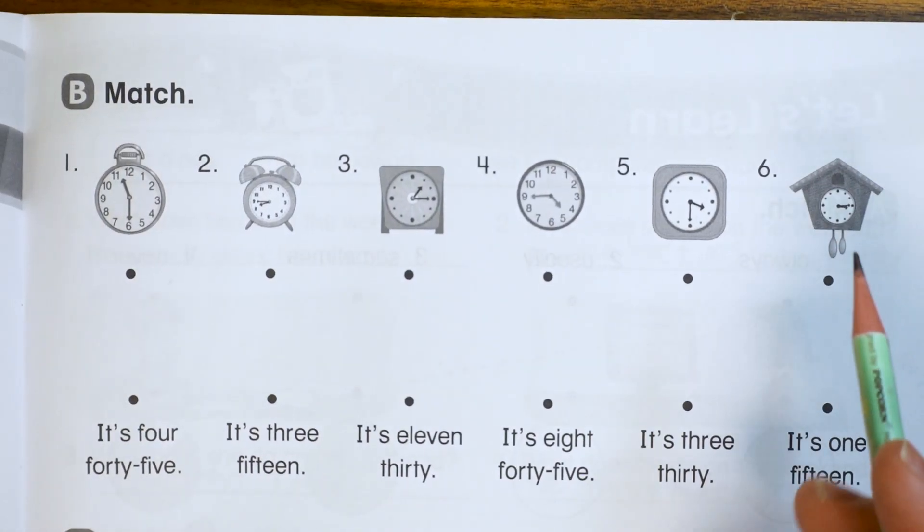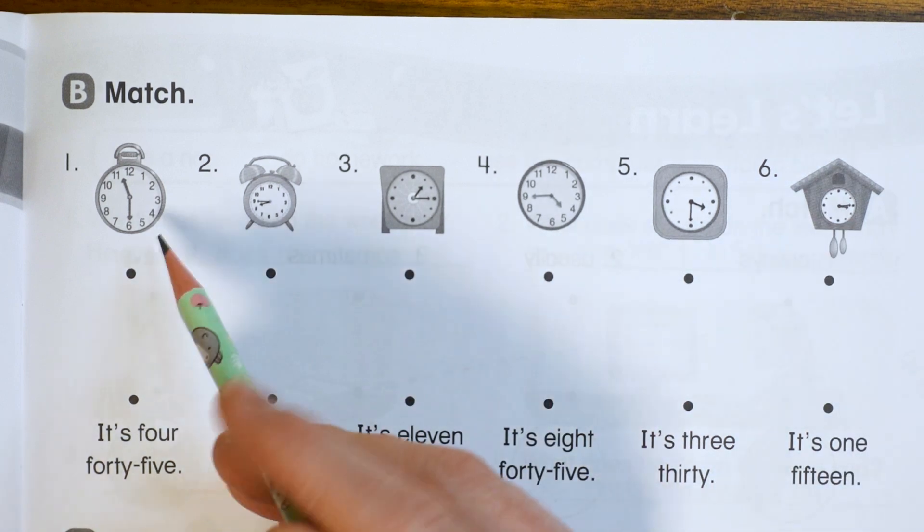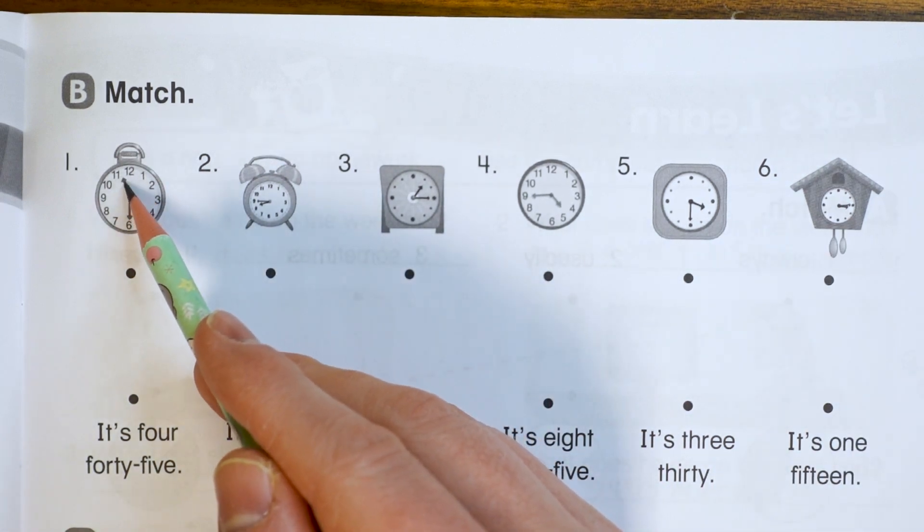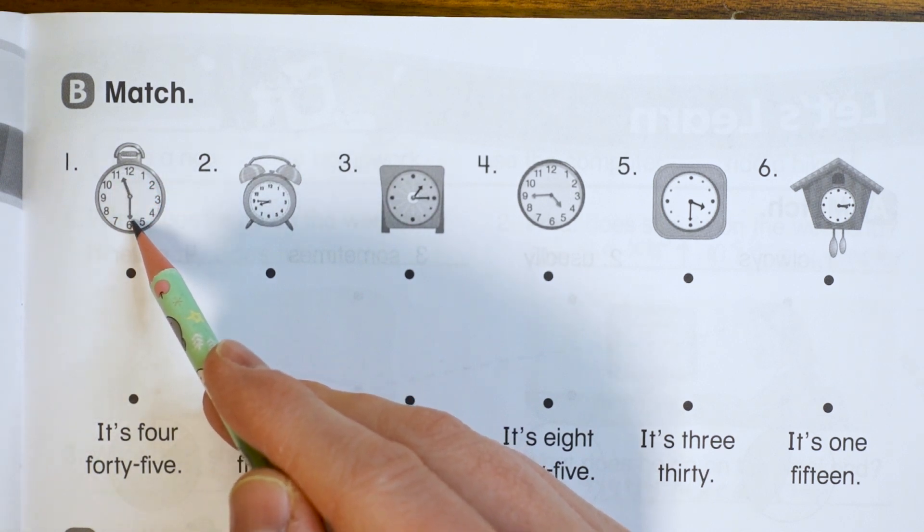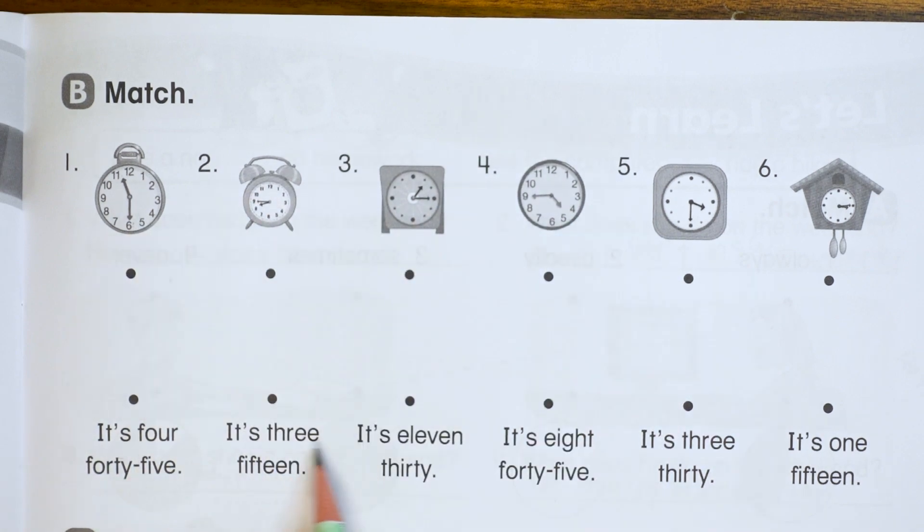Now we're ready to match. So let's match to the clock faces. Now this one has the hour hand in between 11 and 12. So it's 11. And if it's pointing at the six, that means 30. So 11:30. Let's find that, there's 11:30 right here. It's 11:30.